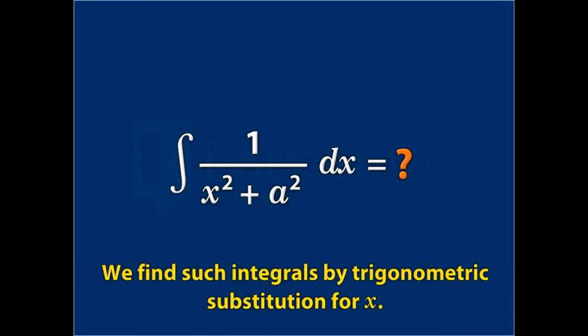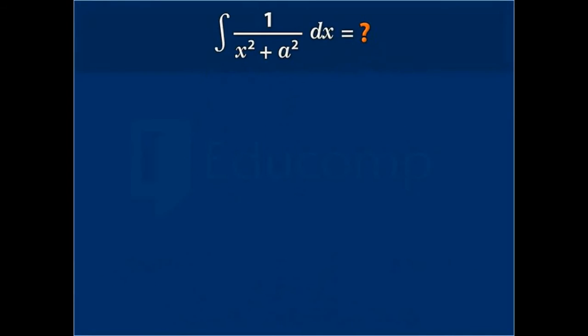To solve this integral, we put x = a tan θ. Differentiating both sides with respect to θ, we get dx/dθ = a sec²θ, or dx = a sec²θ dθ.